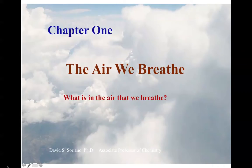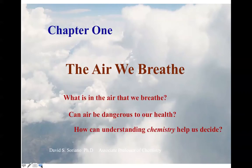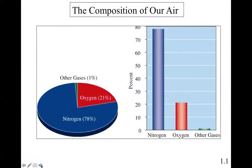What is in the air that we actually breathe? Good question. Can air be dangerous to our health? How can understanding chemistry help us decide? The composition of our air — chemists would describe it as a homogeneous mixture of gases. Diatomic nitrogen N2 comprises about 78% by mass of our atmosphere, oxygen 21%, and other gases combined for a contribution of 1%. Looking at a bar graph here, we can see the same figures as shown in the pie graph.